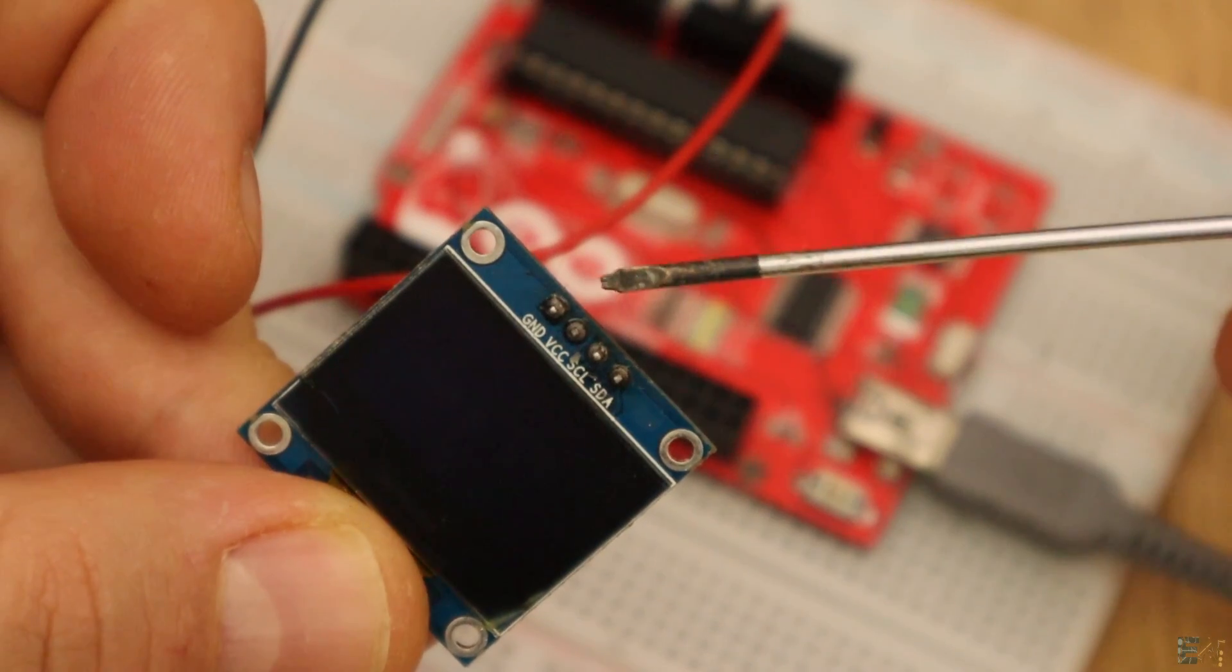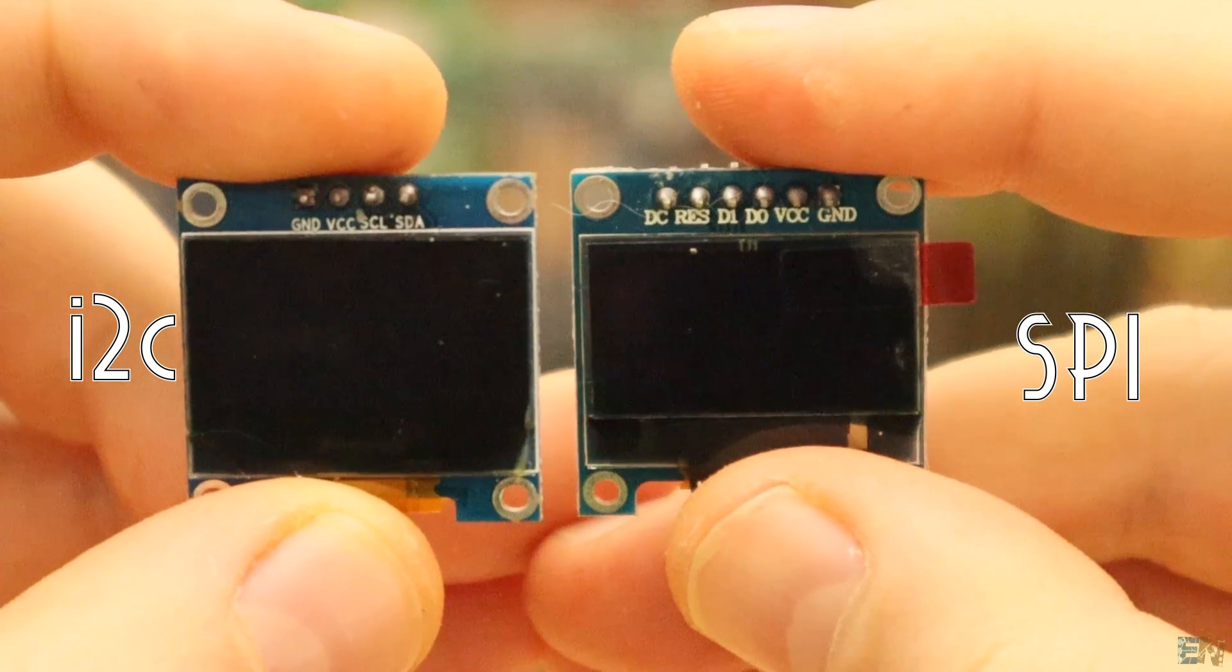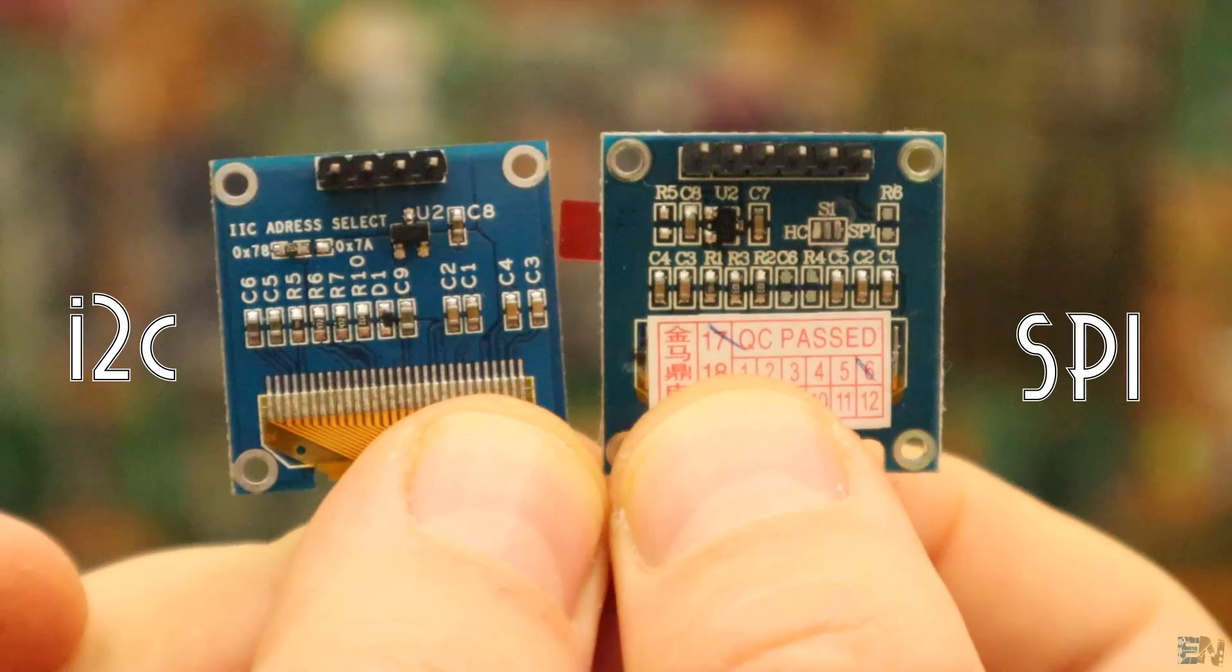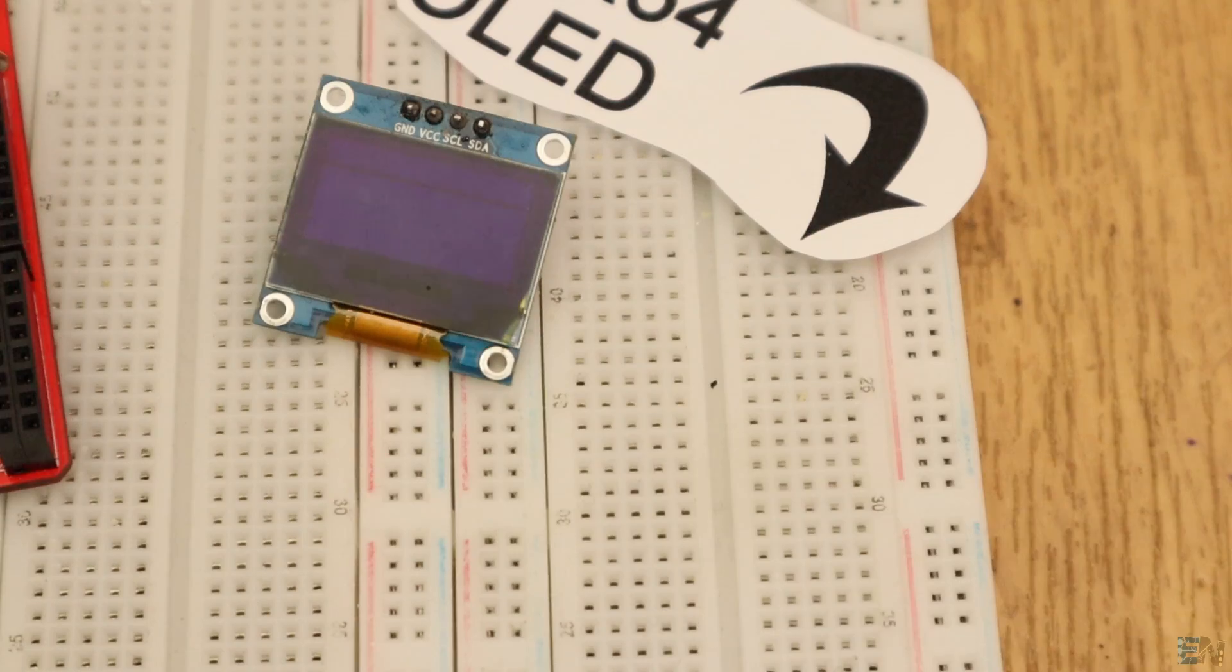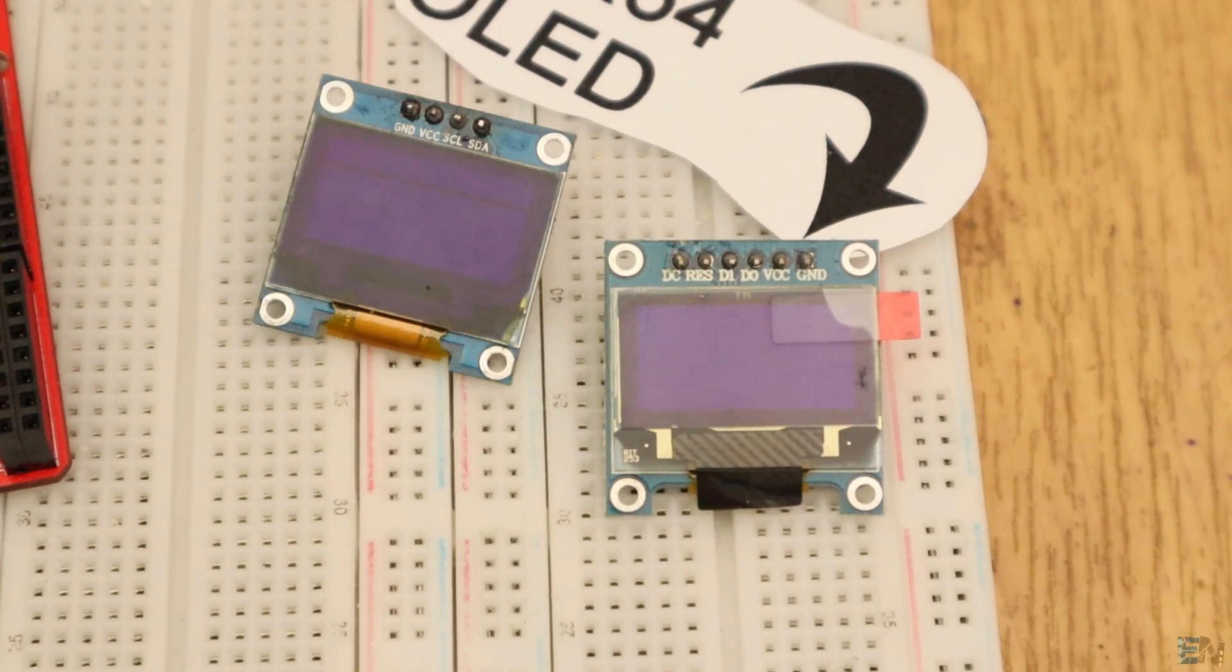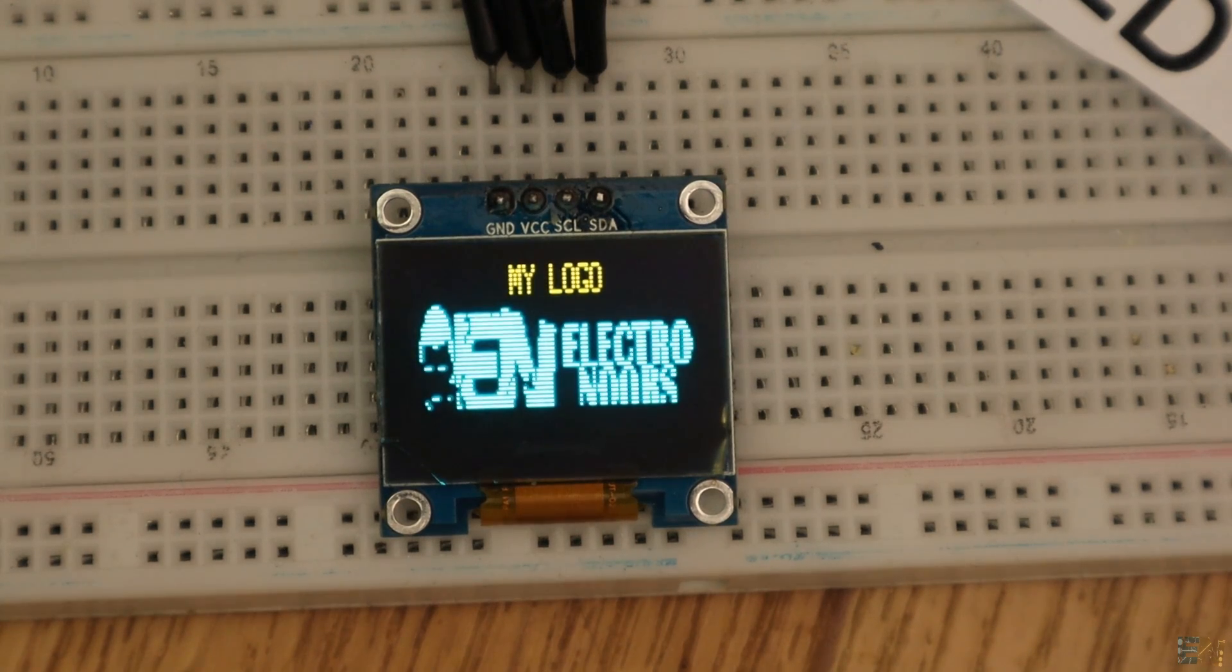This OLED display usually use I2C communication but also SPI. I wasn't able to make the SPI one to work since I had some problems with the libraries. That's why I always use the I2C type.